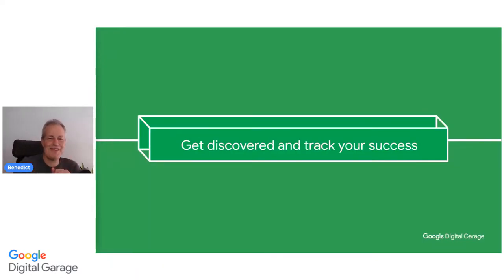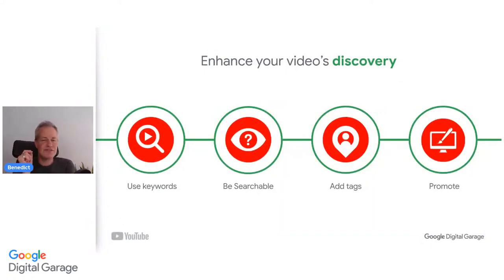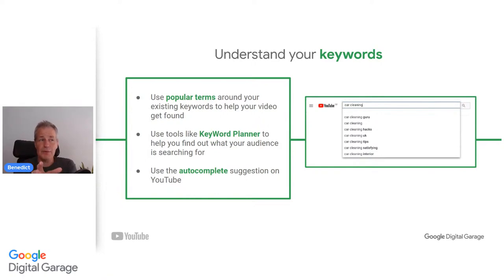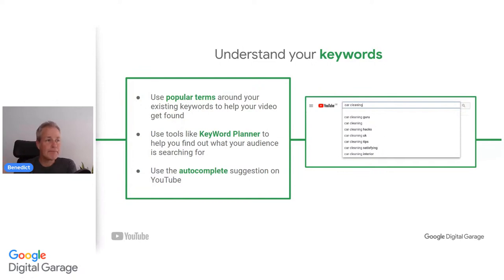Get discovered and track your success. Enhance your video's discovery — use keywords, be searchable, add tags, and promote as much as possible. Understand your keywords: use popular terms around your existing keywords to help your video get found. Use tools like Keyword Planner to find out what your audience is searching. If you register with Google Ads, you've got a Keyword Planner which you can use totally free. Use autocomplete suggestions on YouTube — start typing something and see what YouTube suggests to finish your sentence, which can give you a great idea of what people are searching for.